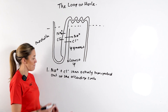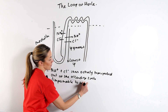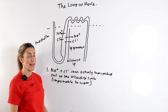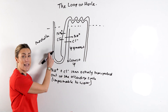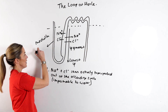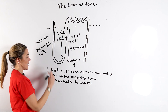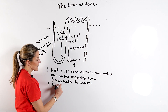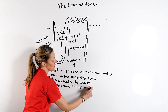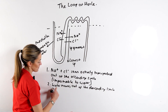The ascending limb is impermeable to water because the wall is thicker, so no water is going to move out of the ascending limb. But the descending limb, which has a thinner wall, is permeable to water. So what's going to happen is water moves out of the descending limb by osmosis.